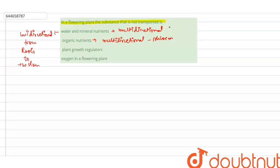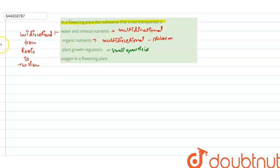The third option says plant growth regulators, or plant hormones. These chemicals are also transported, though in very small quantities. They are still translocated or transported in flowering plants.